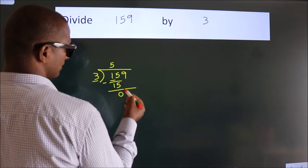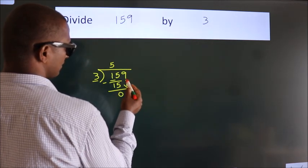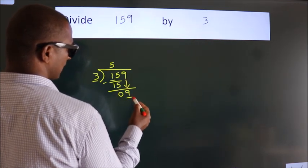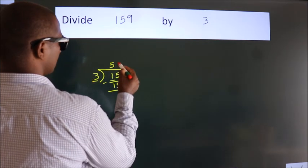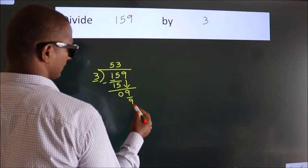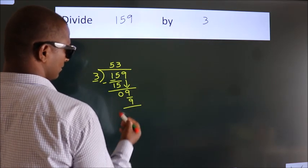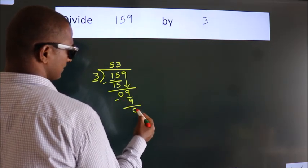After this, bring down the beside number. So 9 down. So 9. When do we get 9? In 3 table. 3 threes. 9. Now we subtract. We get 0.